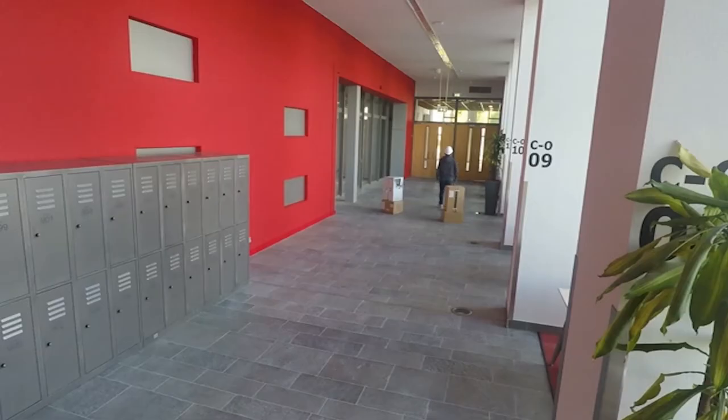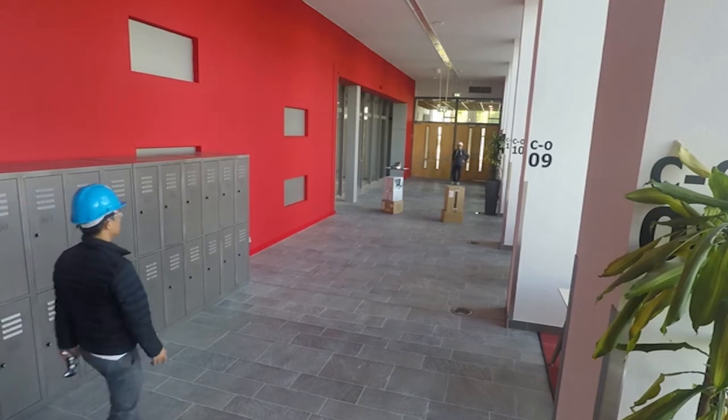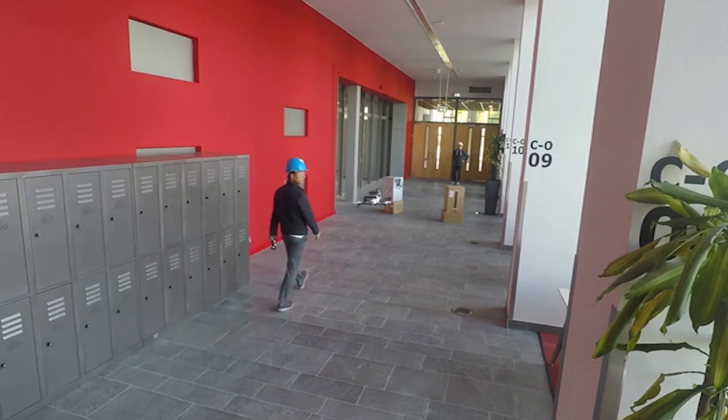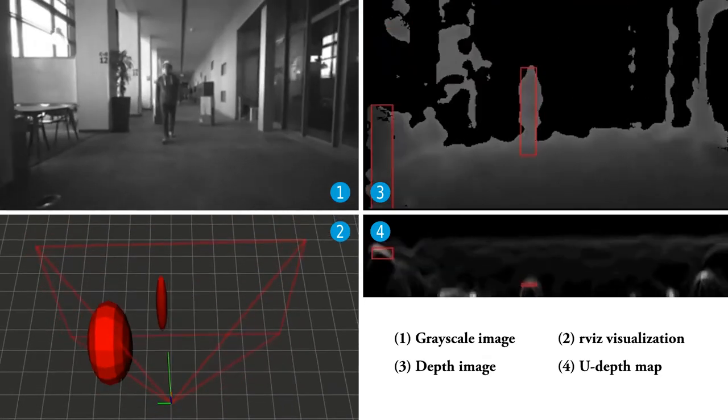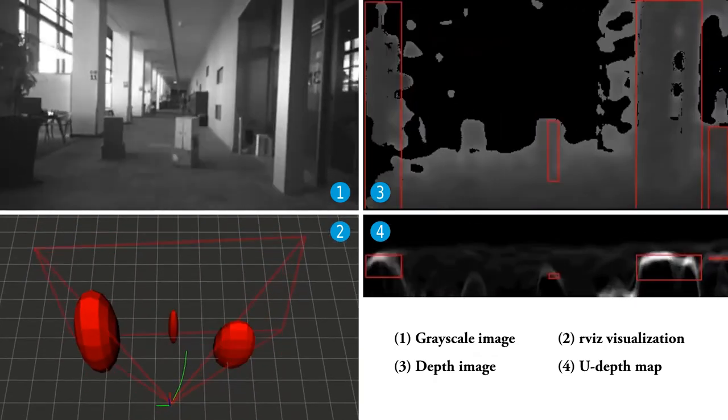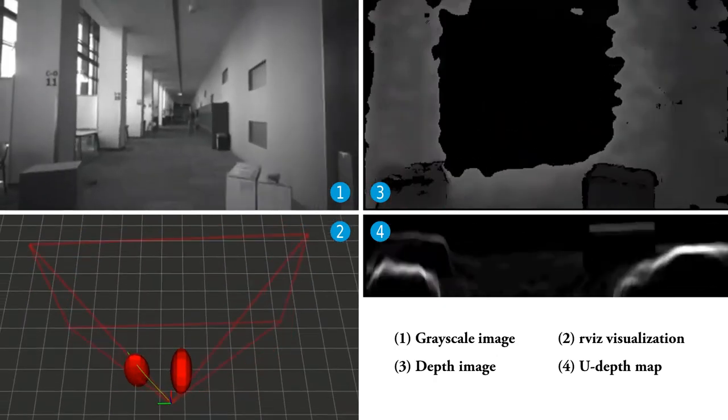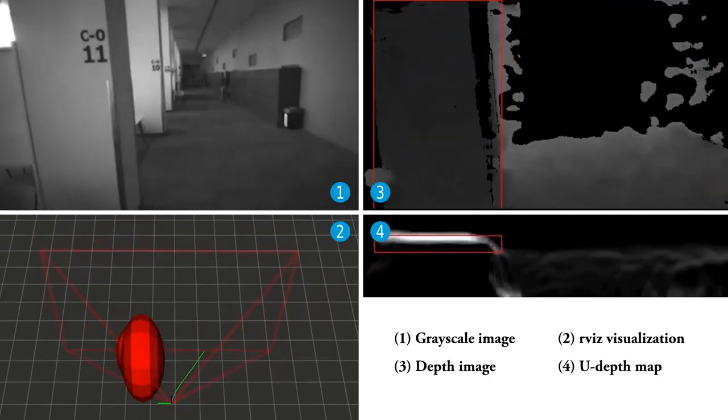Using the proposed system, we have demonstrated successful collision avoidance for a quadrotor in dynamic environments. In this video, the quadrotor was flying in a long corridor with both static obstacles and walking human obstacles. In this experiment, a maximum speed of 2.4 meters per second was achieved by the quadrotor.